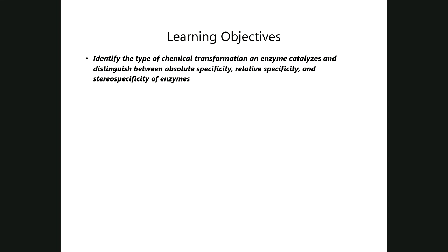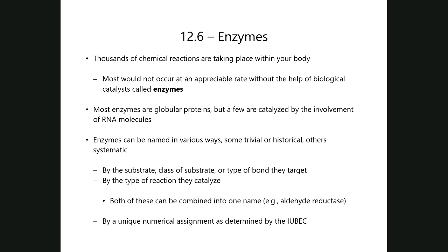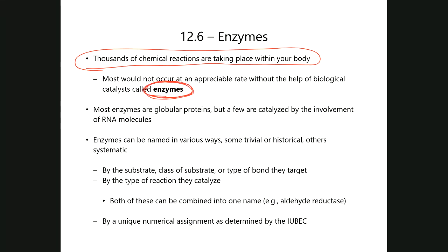We are now heading into the last portion of the course, which covers enzymes. Enzymes are largely proteins, though there are a few examples that are not entirely composed of proteins — those involve RNA and molecular genetics, which we won't cover here. For the most part, the thousands of chemical transformations happening in the human body would not occur at an appreciable rate to allow life to continue without these biological catalysts. Most enzymes are globular proteins.